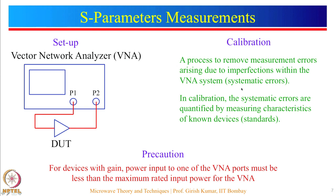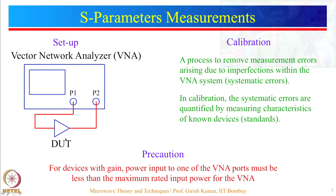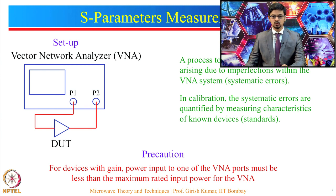During the calibration process, systematic errors are quantified by measuring the characteristics of known devices called absolute impedance standards. Once these quantified systematic errors are known, they can be adjusted in the actual DUT measurements to give more accurate results. We will see how to do the calibration process and how to measure S parameters in the practical part of this lecture.